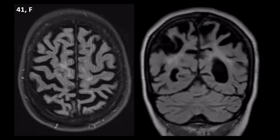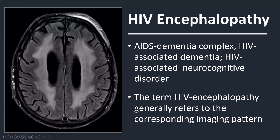Here is another example where the atrophy is more pronounced — a 41-year-old female patient with HIV. We have severe atrophy and some confluent periventricular white matter changes, but here the atrophy dominates the image more than the white matter abnormalities. Notice that the atrophy is located supratentorially and the cerebellum is relatively spared — there is some mild accentuation of the cerebellar fissures, but not much. So it's mainly a supratentorial atrophy.